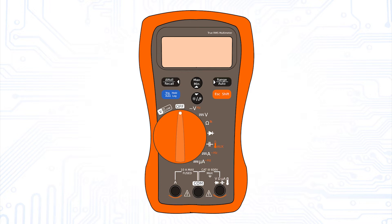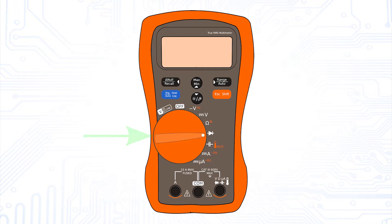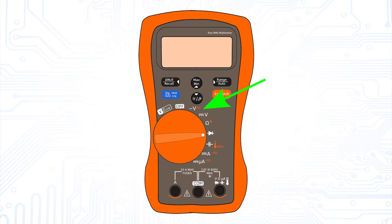Depending on which quantity you want to measure, the correct connection must be chosen. Typically there is one connector for voltage and resistance measurements and one connector for current measurements. Sometimes there are even two connectors for current measurement, which are marked with different measuring ranges. There will be more about this later. The rotary switch in the center of the multimeter is used to choose the desired measurement. Most devices offer at least the possibility to measure DC and AC voltage, DC and AC current, and resistances.